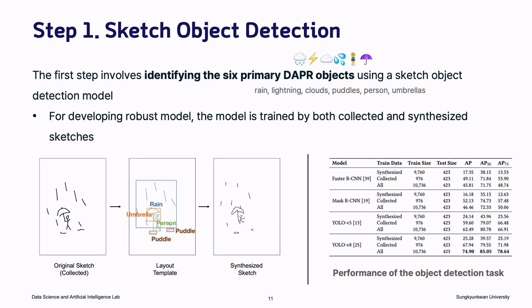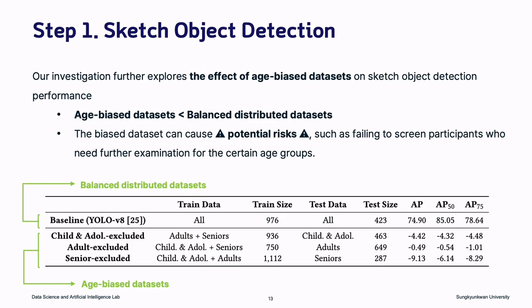The first step is identifying the six DAPR objects using a sketch object detection model. For developing a robust model, we train the model using both collected and synthesized sketches. We also investigate the effect of the age bias dataset on model performance. Overall, the performance of the age-biased dataset is lower than those with a balanced distributed dataset across age groups. This suggests that a biased dataset, which does not include a specific population, can cause potential risks such as failing to screen participants who need further examination for certain age groups.